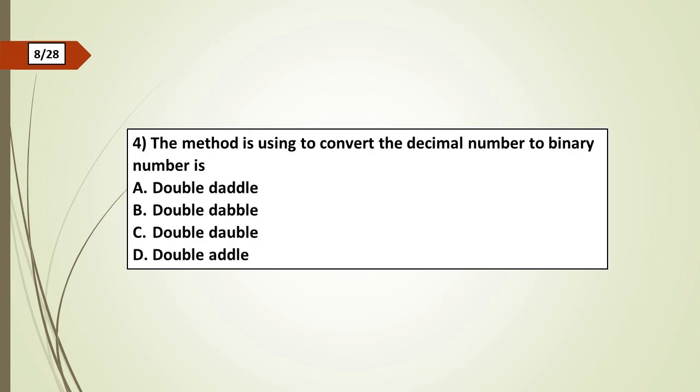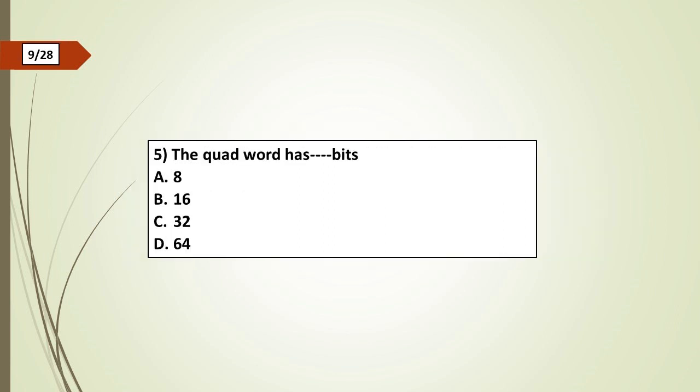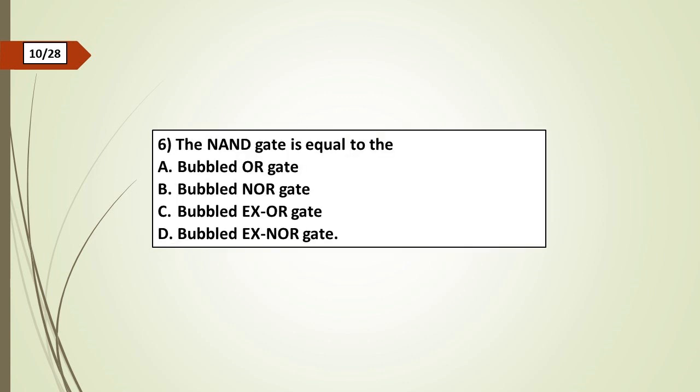Fourth question: The method used to convert the decimal number to binary number is: a) double dabble, b) double double, c) double dabble, d) double adder. Fifth question: The quad word has dash bits: a) 8, b) 16, c) 32, d) 64.